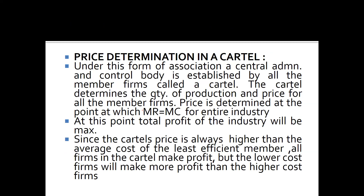Under this form of association, a central administrative and control body is established by all the member firms — this is called the cartel. The cartel determines the quantity of production and the price for all member firms. Price is determined at the point at which marginal revenue equals marginal cost for the entire industry. At this point, the total profit of the industry will be maximum.